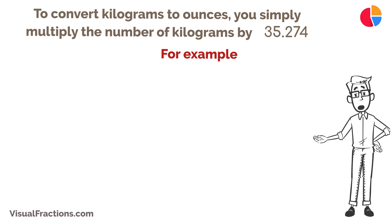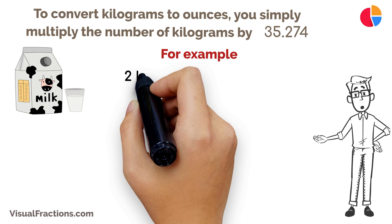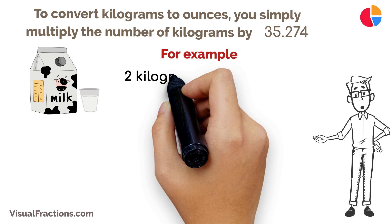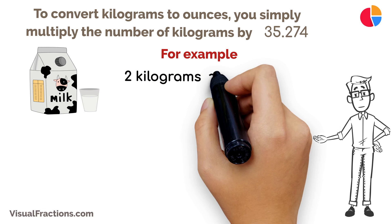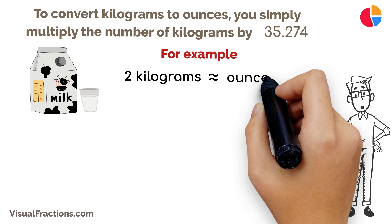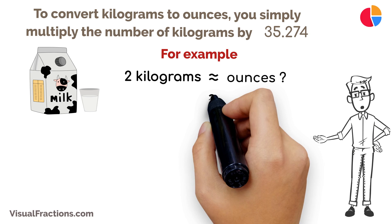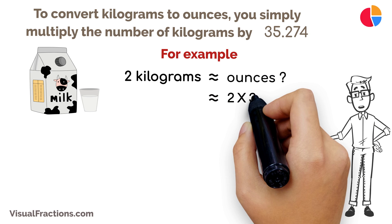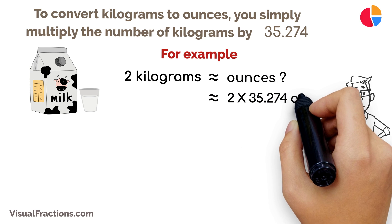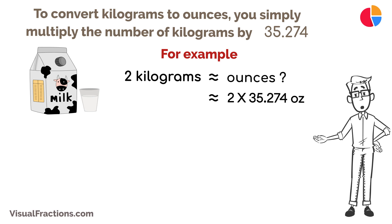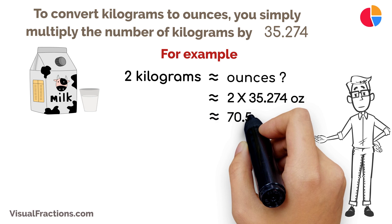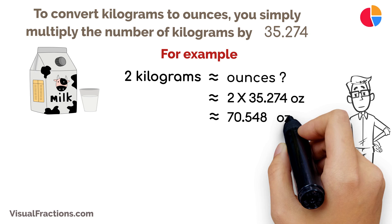For example, if you want to convert two kilograms into ounces, you would multiply two kilograms by 35.274. This results in a total of approximately 70.548 ounces.